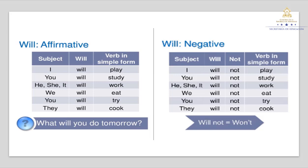The negative form is used to deny predictions, beliefs, or intentions about the future. I need that you look at the last part — the contraction of the words 'will not': won't. 'Won't' is the contraction form of 'will' plus 'not'.